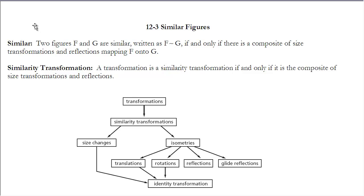We get what we call similar figures. And we describe similar figures as two figures, F and G are similar, written F is similar to G with that one squiggly, if and only if there is a composite of size transformations and reflections mapping F onto G. Now remember, composite of reflections is all of those isometries are composites of reflections. So that gives us what we call similar figures.